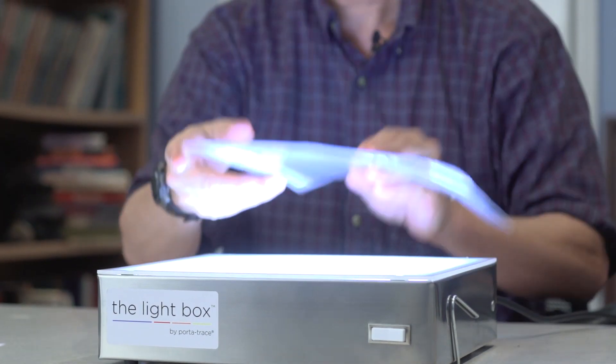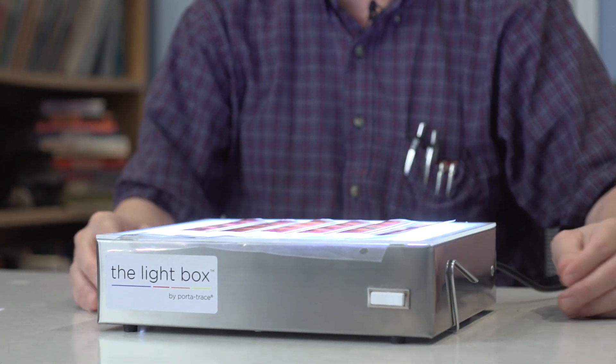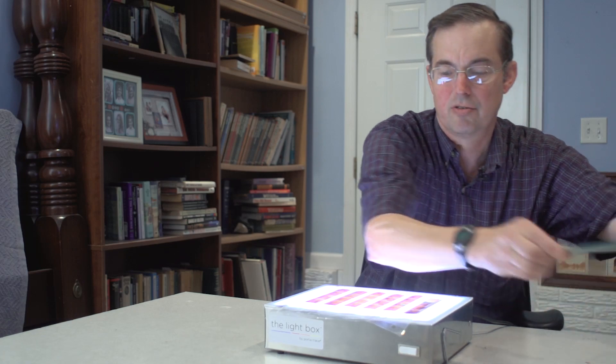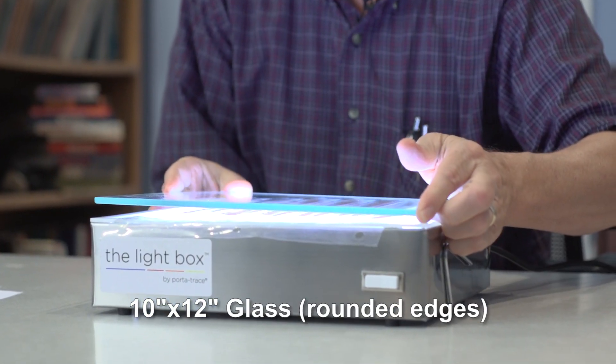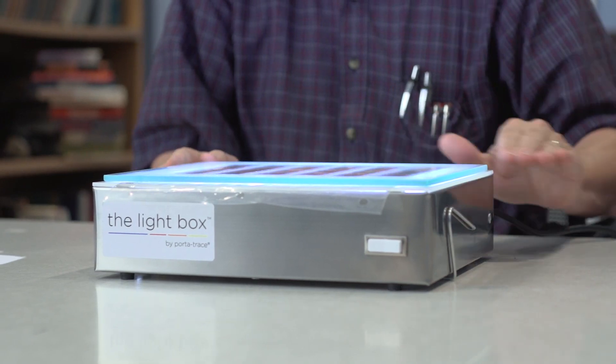Now you'll find when you lay the archival sheets onto the light box that the negatives don't stay flat. If you go to your local glass store and have them cut a piece of glass, be sure to have them round the edges, you will be able to hold your negatives flat onto the light box in order to take a nice digital image.